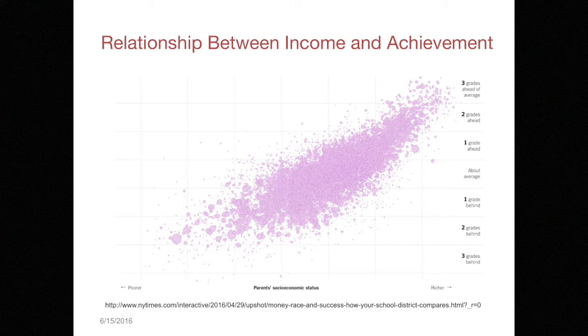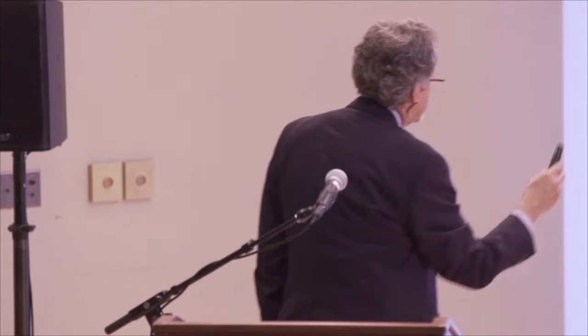There are sort of two stories in that diagram. You can see the clear correlation between the income of the community and the achievement of students. However, within any given income line, there's an enormous range of achievement — so schools do matter. Nobody's suggesting schools can't make a difference. Within each line they do make a difference, but the overall trend is that income actually matters more.